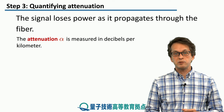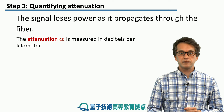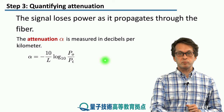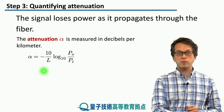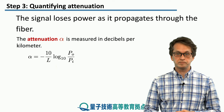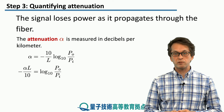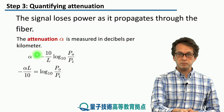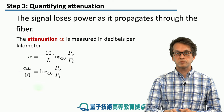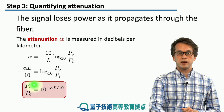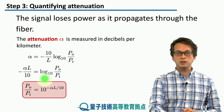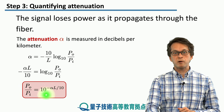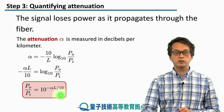We can also define the attenuation parameter alpha, which is the number of decibels per kilometer. Alpha is just our previous expression divided by the length of the fiber L. Rearranging — bringing L to the other side, the minus to the other side, and dividing by 10 — we obtain an expression for the fraction of power out over power in, equal to 10 raised to the power of negative alpha times L over 10.